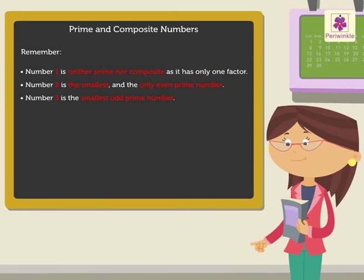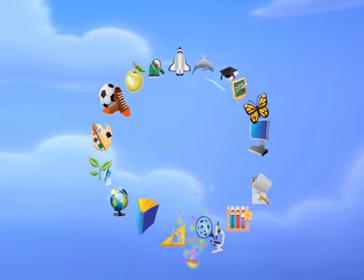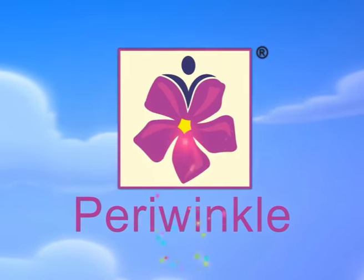Now, why don't you list all the prime and composite numbers from 1 to 100?